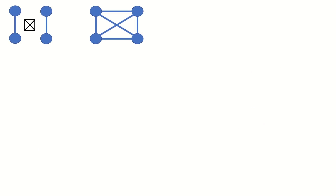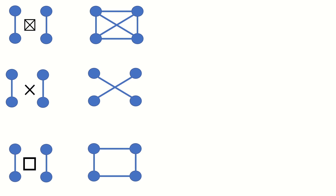As an interesting tidbit, the symbol for the strong product of two graphs visually represents the strong product of two path graphs of two vertices each. In fact, if you think about the previous products we covered — the tensor and Cartesian products of graphs — their symbols also represent their respective products of two path graphs with two vertices. So that's one way to remember what each symbol means.